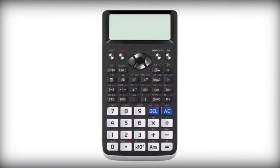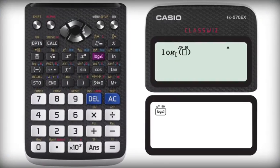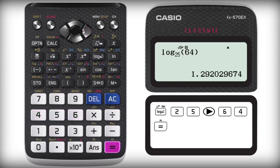Using Casio to check your answer, press the logarithm button with variable base number and value, input base number of 25 and value of 64 and press equal. You should get a simplified value of 1.292029674. That means logarithm base 5 of x equals this calculated value.